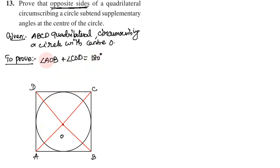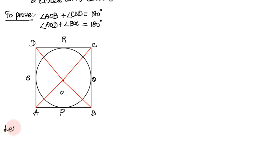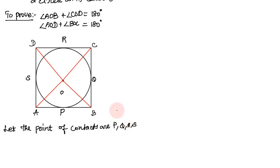So the point of contacts are P, Q, R, and S. We need to join lines OA, OB, OC, OD and also join O to the points of contact: OP, OQ, OR, OS. Then name the angles as angle 1, angle 2, angle 3, angle 4, angle 5, angle 6, angle 7, angle 8.